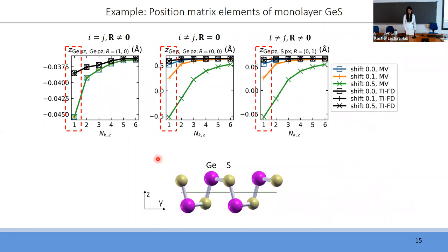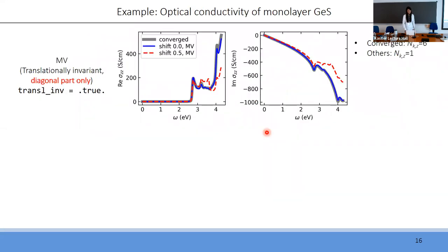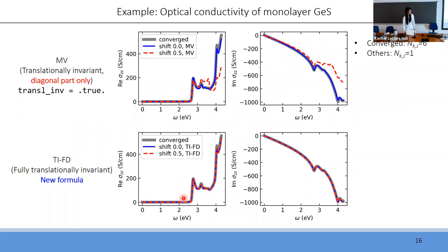We implemented this new method in the WannierBerry code. For the three off-diagonal matrix elements shown previously, using the new translation-invariant finite difference formula — shown with black symbols — the results are independent of shift and converge much faster using only a single k-point along the vacuum direction. For the optical conductivity, the fully translation-invariant new formula gives results that are really independent of shift and very similar to the converged results even with a single k-point along the z-direction, making it much more accurate and robust compared to existing methods.